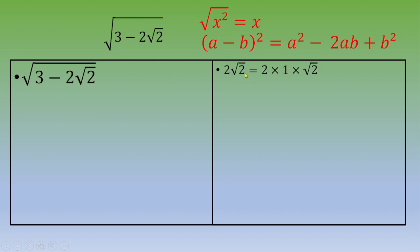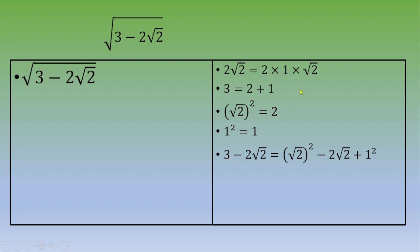2 square root of 2 is 2 times 1 times square root of 2. 3 can be written as 2 plus 1. Square root of 2 squared equals 2. 1 squared equals 1. Then 3 minus 2 square root of 2 can be written as square root of 2 squared minus 2 square root of 2 plus 1 squared.